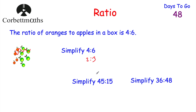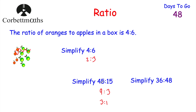Here are two questions for you to try: simplify the ratio 45 to 15, and simplify the ratio 36 to 48. For 45 to 15, both numbers are divisible by 3, 5, and 15. If we divide both by 5 we get 9 to 3, and then dividing both by 3 gives us 3 to 1. So the simplified ratio is 3 to 1.